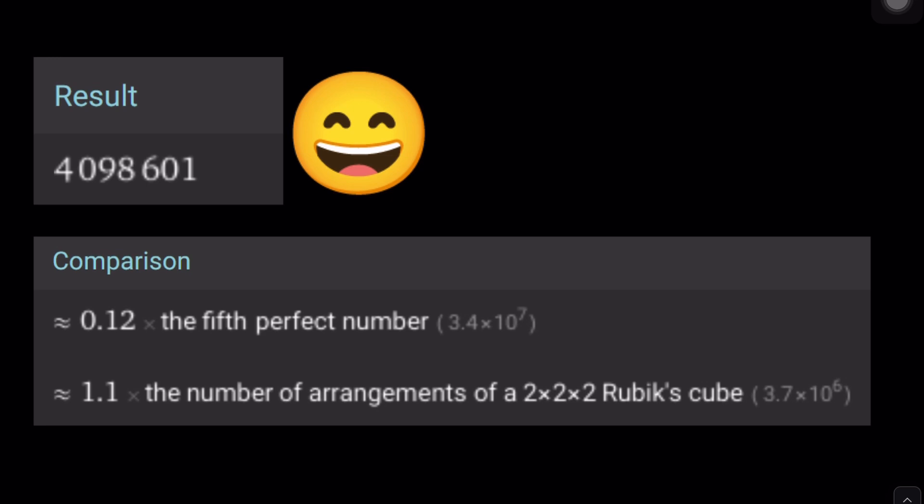Ta-da! That is 4,098,601. And check out the comparisons as well, which are I think really, really cool, like this one is pretty close to the number of arrangements on a 2x2x2 Rubik's Cube, not the 3x3x3, because that's huge.